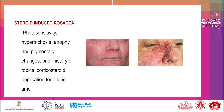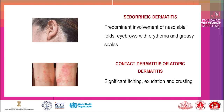Steroid-induced rosacea: photosensitivity, hypertrichosis, atrophy, and pigmentary changes; prior history of topical corticosteroid application for a long time. Seborrheic dermatitis: predominant involvement of nasolabial folds and eyebrows with erythema and greasy scales. Contact dermatitis or atopic dermatitis: significant itching, exudation, and crusting.